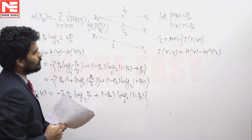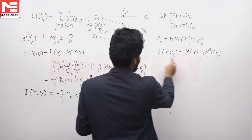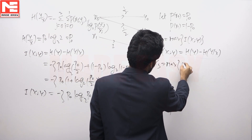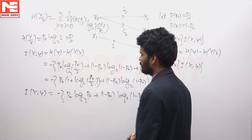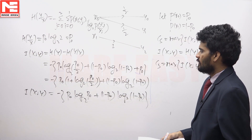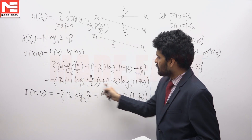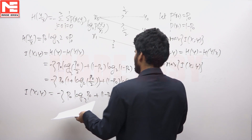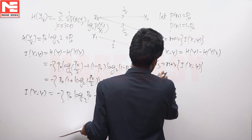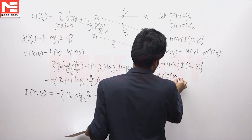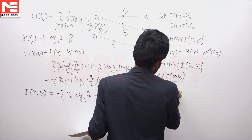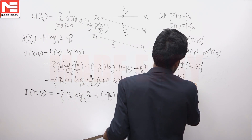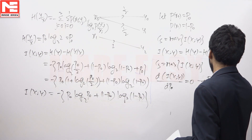Now we find channel capacity C, which is the maximum of I(X;Y). To find for which value of P0 the mutual information is maximum, we differentiate I(X;Y) with respect to P0 and set it equal to zero. This gives P0 equals 1/2.